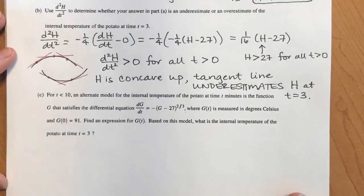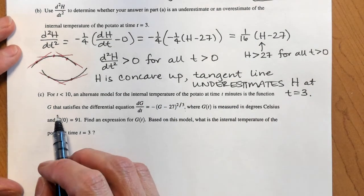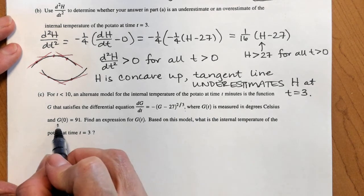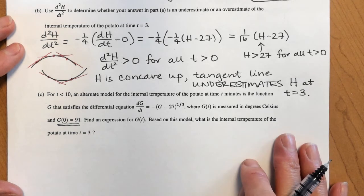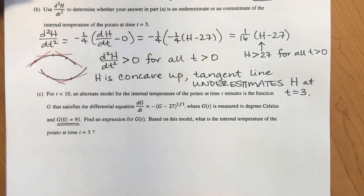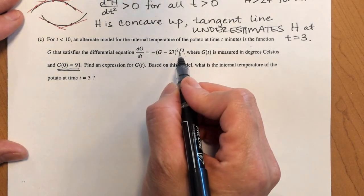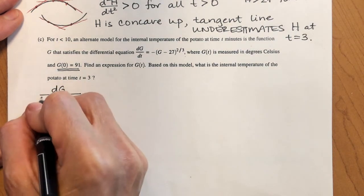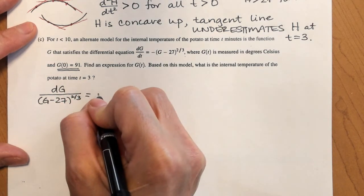Part C: for T less than 10, an alternate model for the internal temperature is the function G satisfying a different differential equation, with G measured in degrees Celsius and initial condition G(0) = 91. We're going to write an explicit equation for G and find the temperature at T equals 3. Starting by separating variables: dG divided by (G minus 27)^(2/3) equals negative dT.